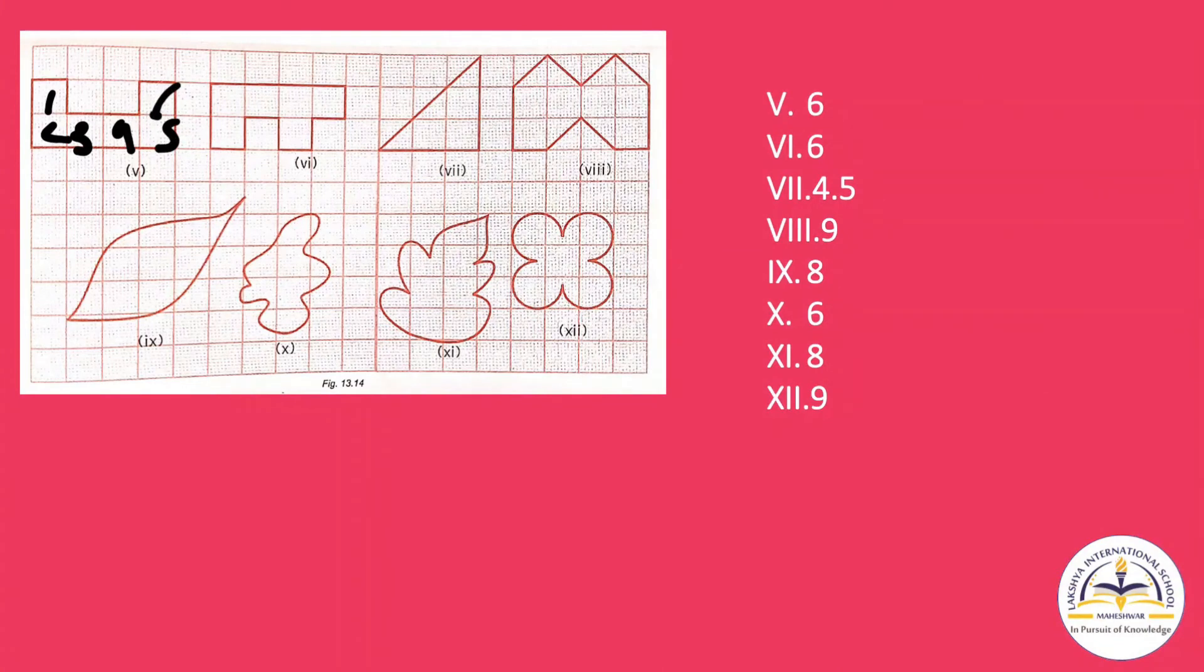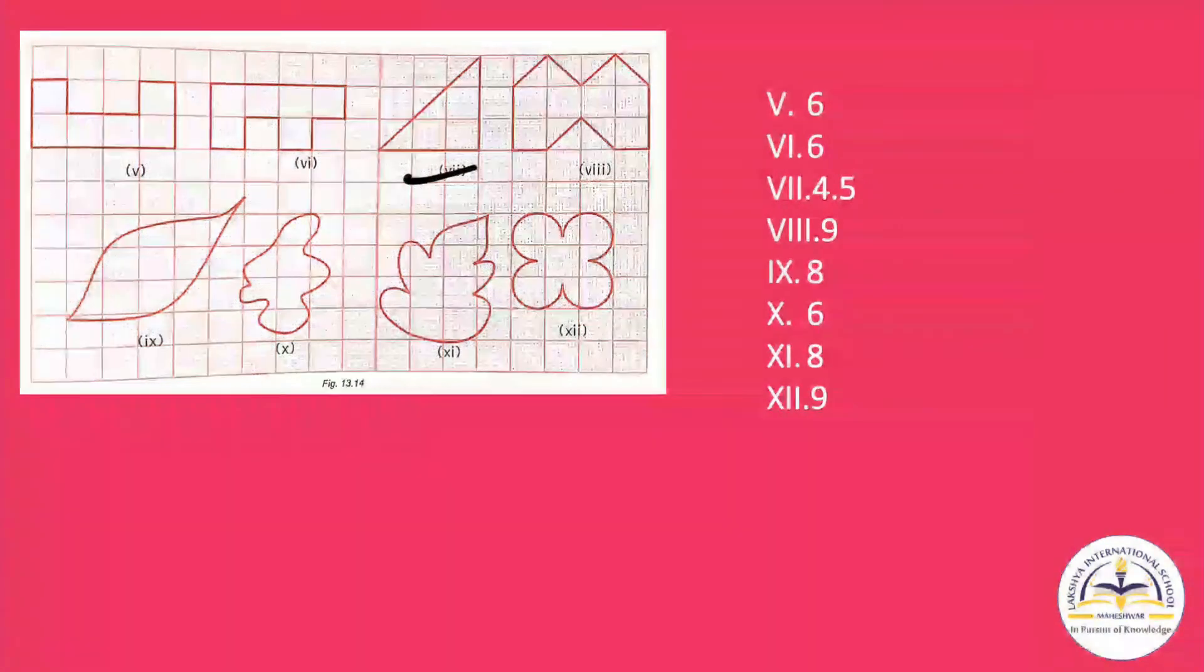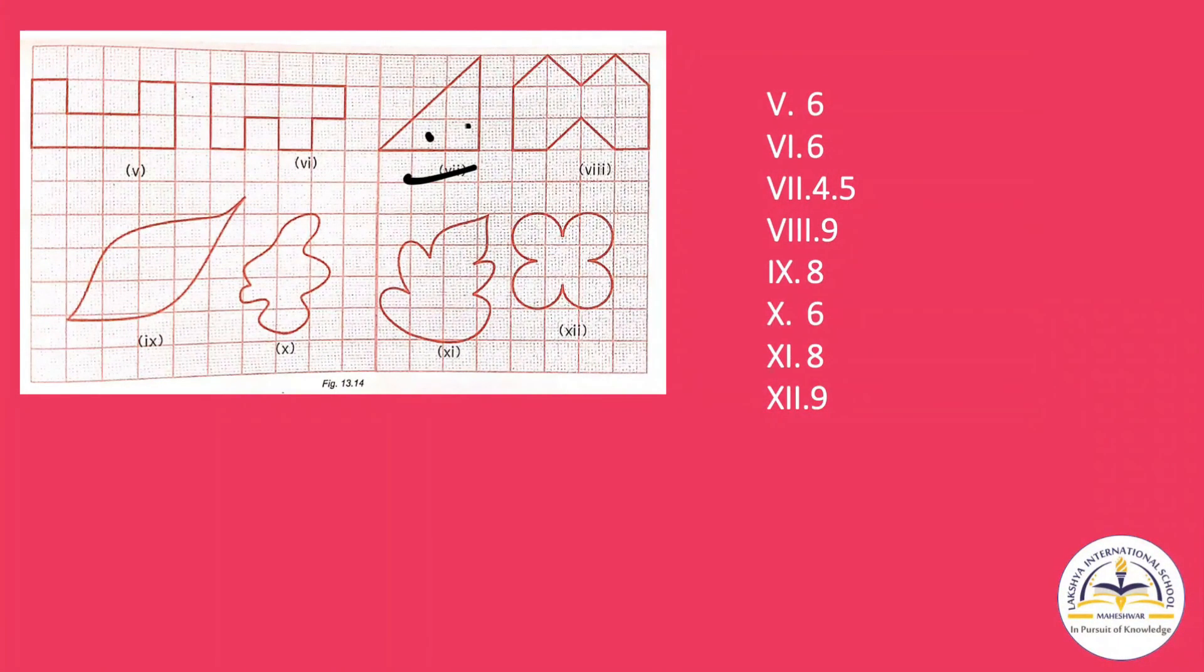Now question number five, how many squares are there? One, two, three, four, five, six. So six. Now for the seventh question, one, two, three. Now this half and this half complete four.